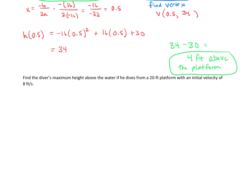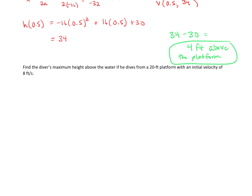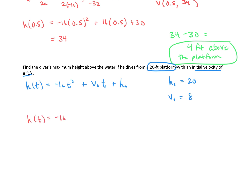One more question: find the diver's maximum height above the water if he dives from a 20-foot platform with an initial velocity of 8 feet per second. Again, we'll write our quadratic function: h of t equals negative 16t squared plus initial velocity times t plus initial height. The platform is 20 feet, so initial height is 20, and the initial velocity is 8 feet per second. Plugging in: h of t equals negative 16t squared plus 8t plus 20.